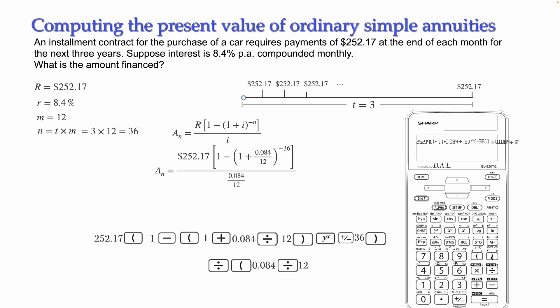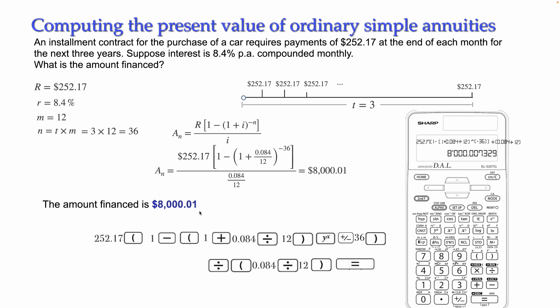Don't forget to close the bracket, then press equals. The calculator gives $8,000.01 — rounded to two decimal places that is $8,000 and 1 cent. So we can answer that the amount financed is $8,000.01. With this I finish my explanation of the present value of an ordinary simple annuity. In the coming video I will show you all the applications of this present value formula. Thank you.